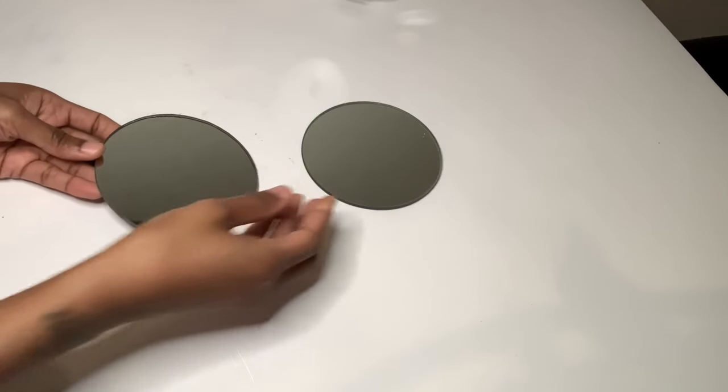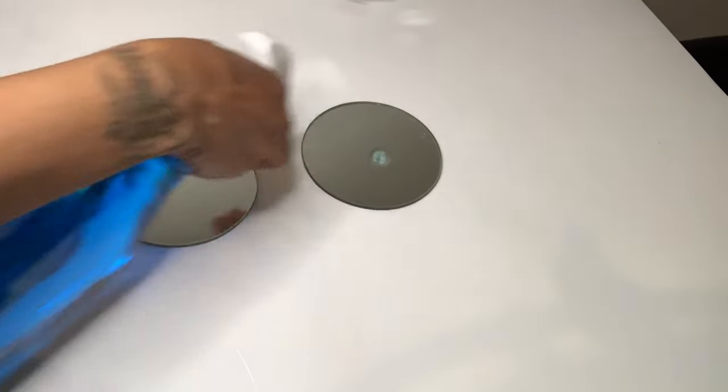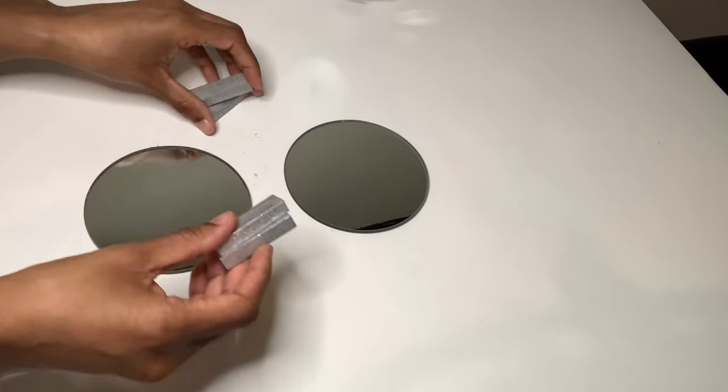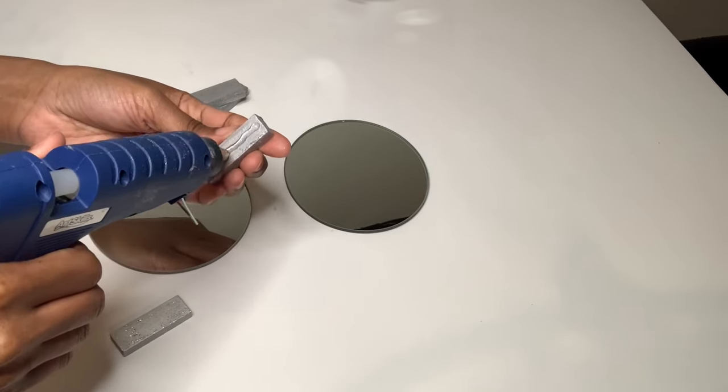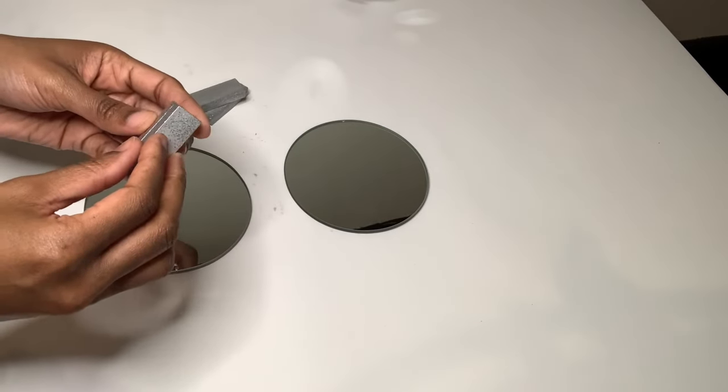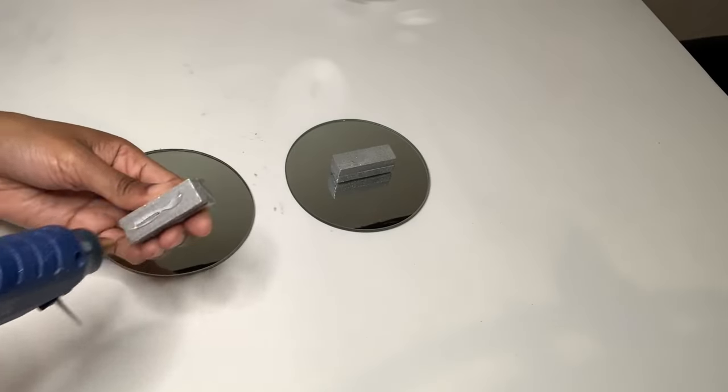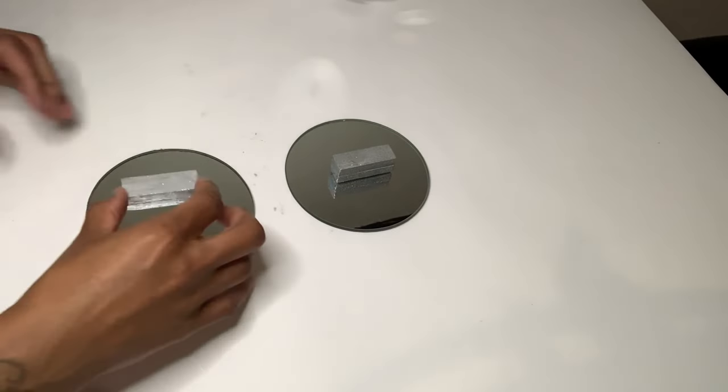For this next step I'm taking these two Dollar Tree mirrors and I'm going to clean them off before proceeding. Moving right along to my wood blocks, I'm just going to glue two together. Now I'm taking my blocks and I'm going to glue them to the center of my mirrors.